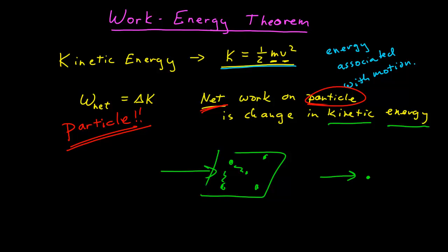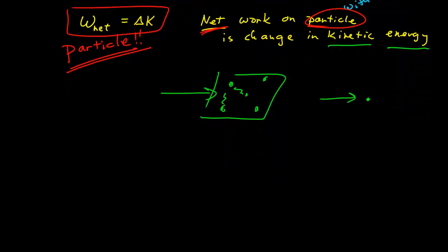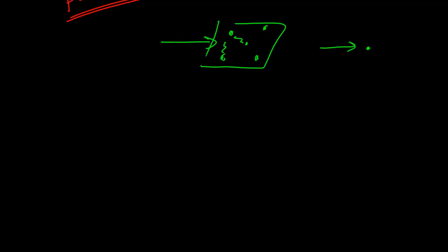But if all I have is a particle with no internal structure, if I put energy into that particle, the only place it can go is into the kinetic energy of motion. So for a particle, we have that the net work is equal to the change in kinetic energy, where kinetic energy is one half the mass of that particle times the speed of that particle squared.